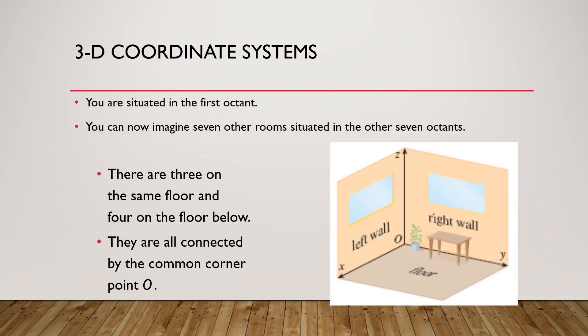As we spoke earlier, the 3 coordinate system will have divided the space into 8 octants. So, this room, imagine this room as your first octant and 7 other rooms are the remains of the octants you have, where the 3 rooms are on the same floor.